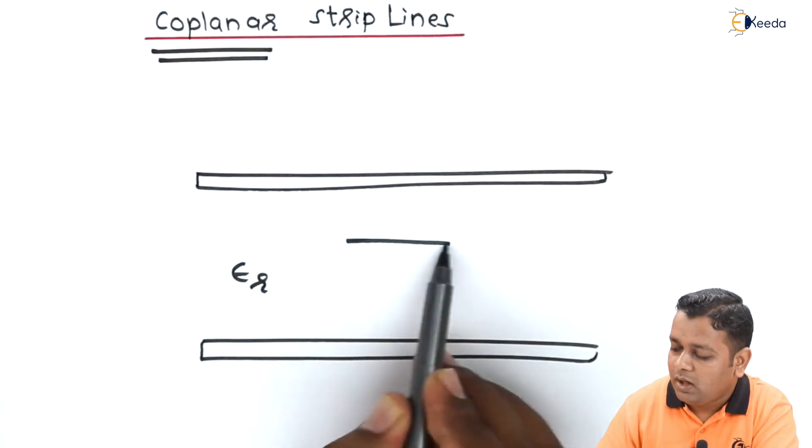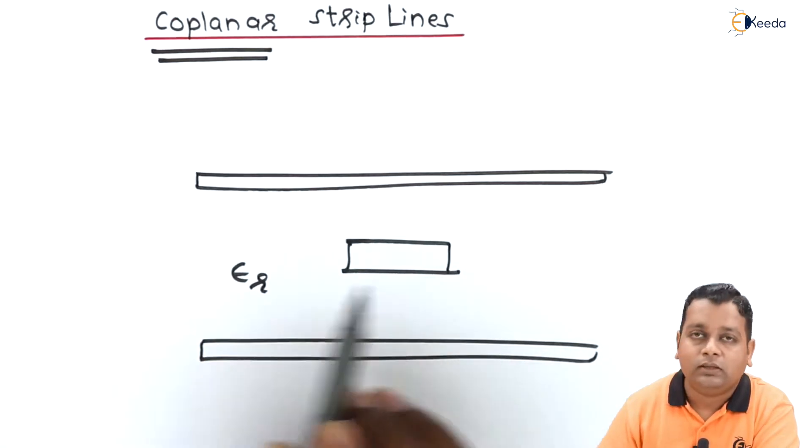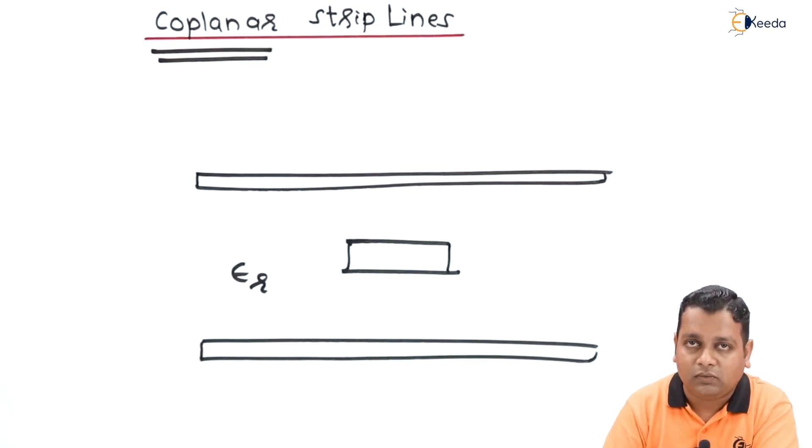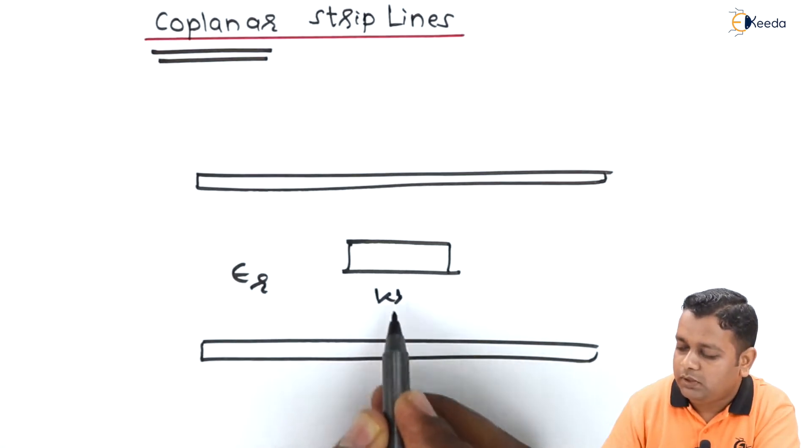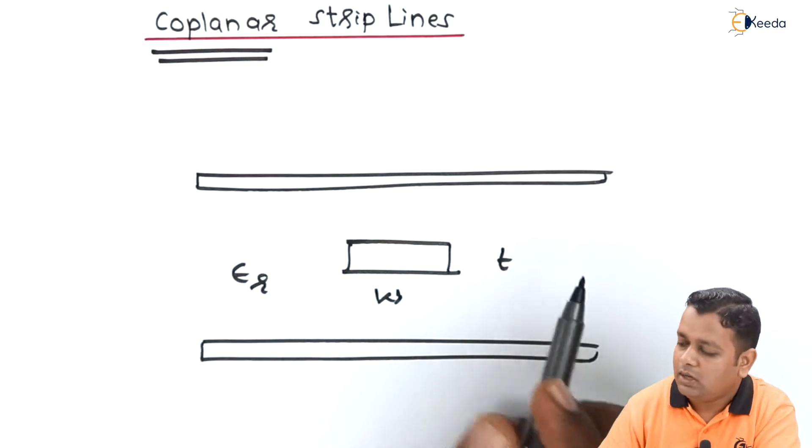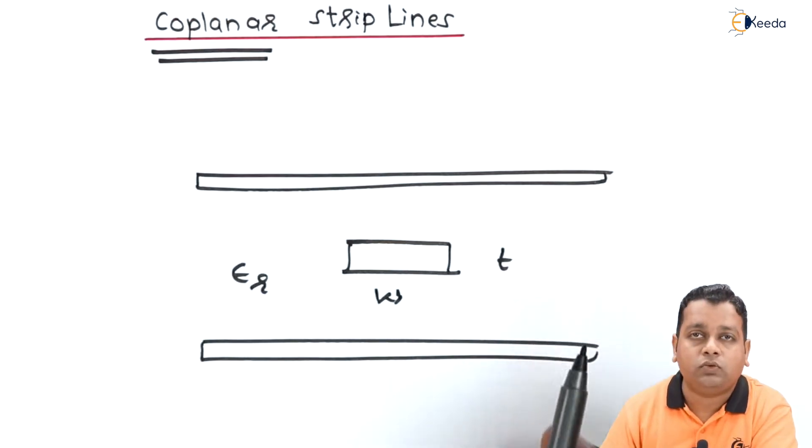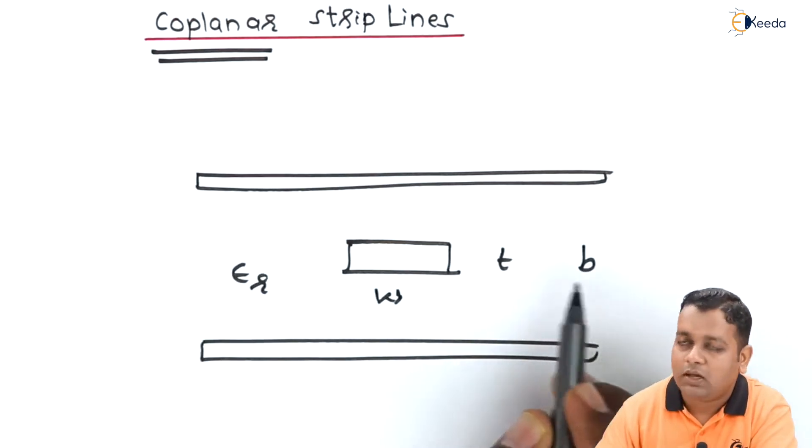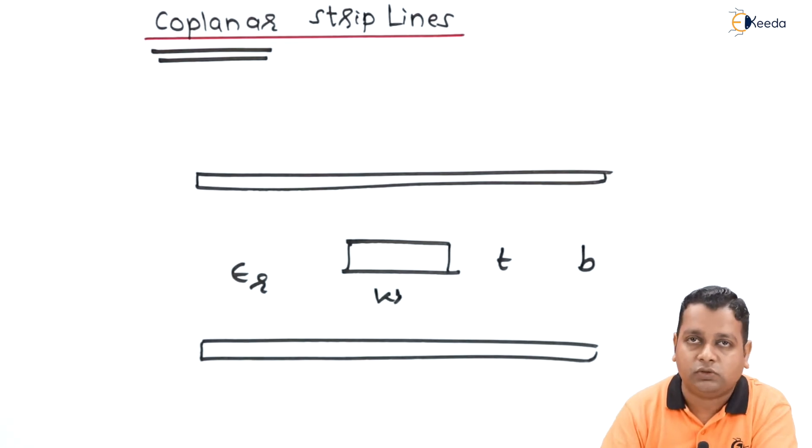Centrally lying is the central conductor, the strip line conductor. It has the width w, the thickness t, whereas the separation between the two ground planes can be represented by b or sometimes h.